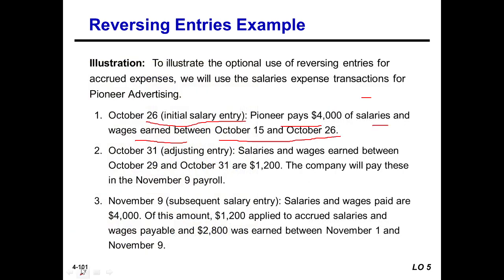On November 9, the subsequent salary entry: salaries and wages paid total $4,000. Of this amount, $1,200 applies to the accrued salaries and wages payable from October, and $2,800 was earned between November 1 and November 9. So everybody should be clear: $1,200 was earned in October and $2,800 was earned from November 1 to November 9.